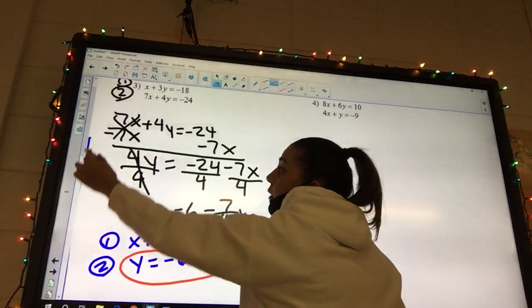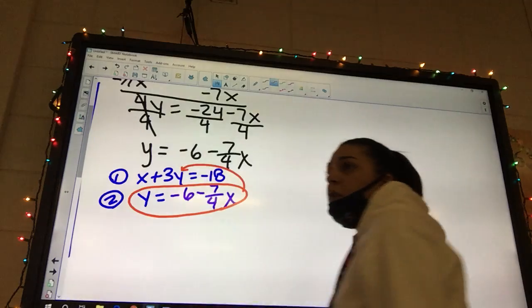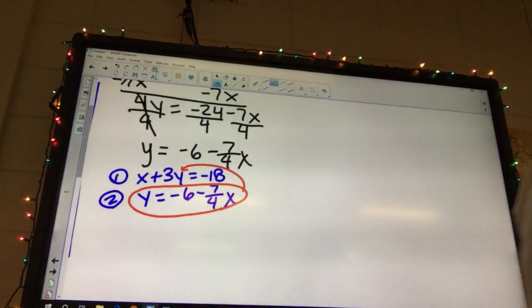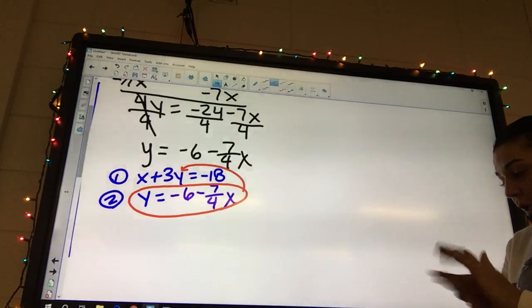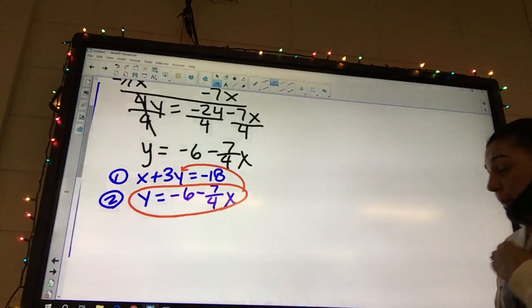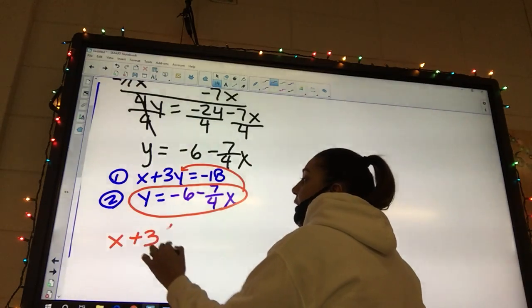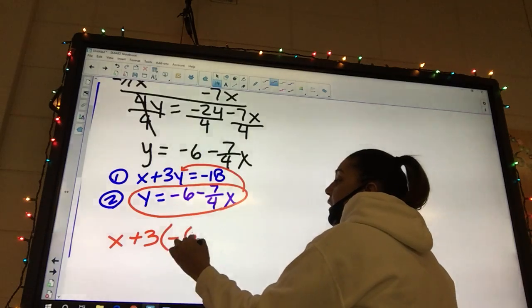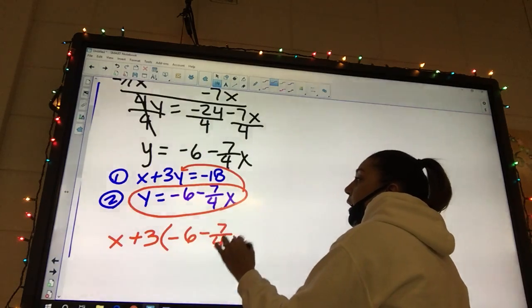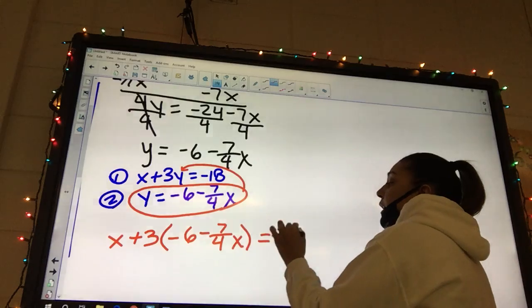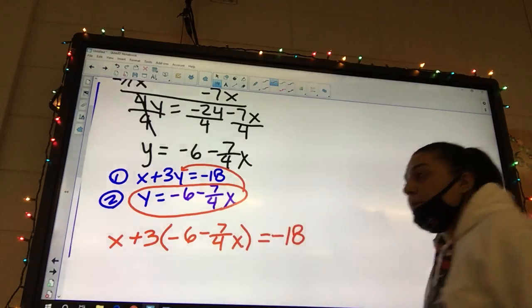And we're going to plug it in to the equation above. What are you looking for? Well, go to the nurse. Yeah. Because you... I said, don't worry. Okay. And so now we can say x plus 3. And instead of y, I'm writing negative 6 minus 7 over 4x equals negative 18.